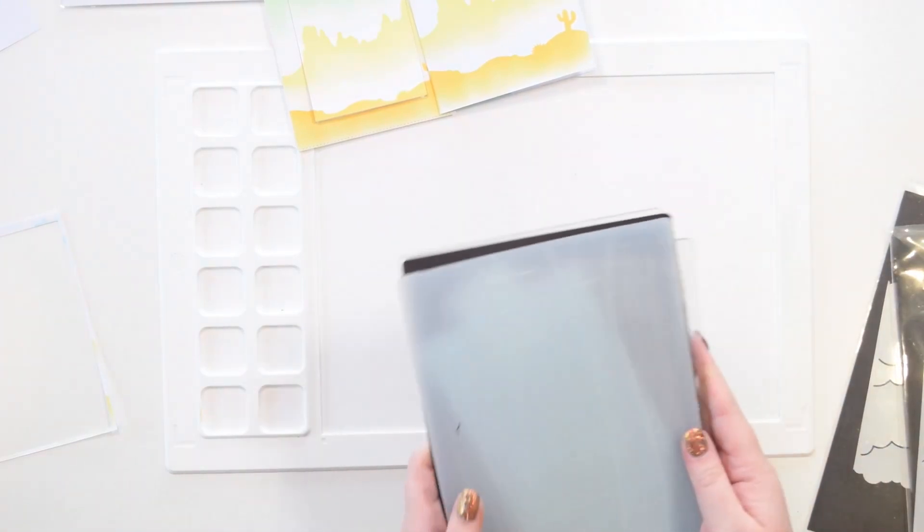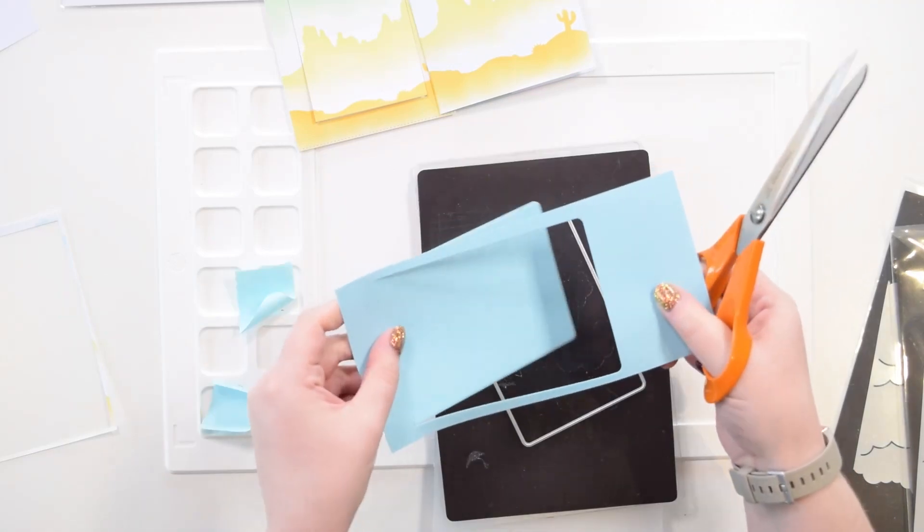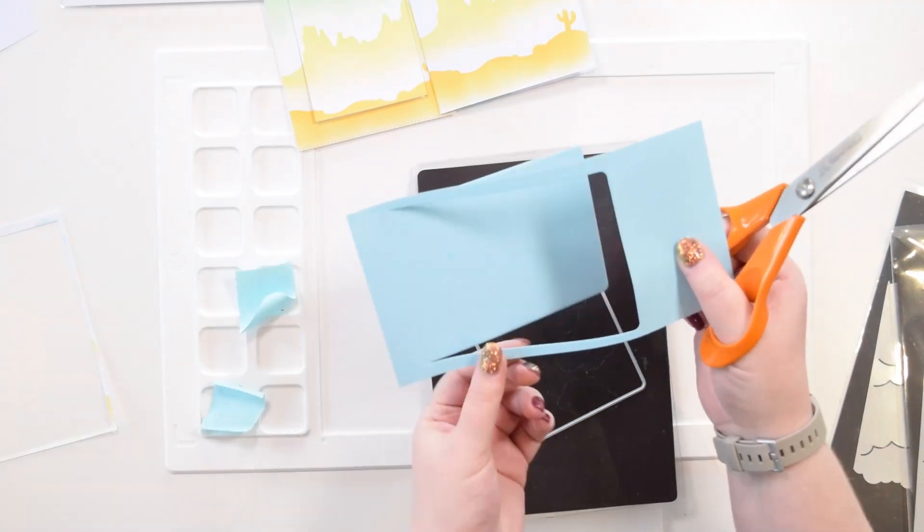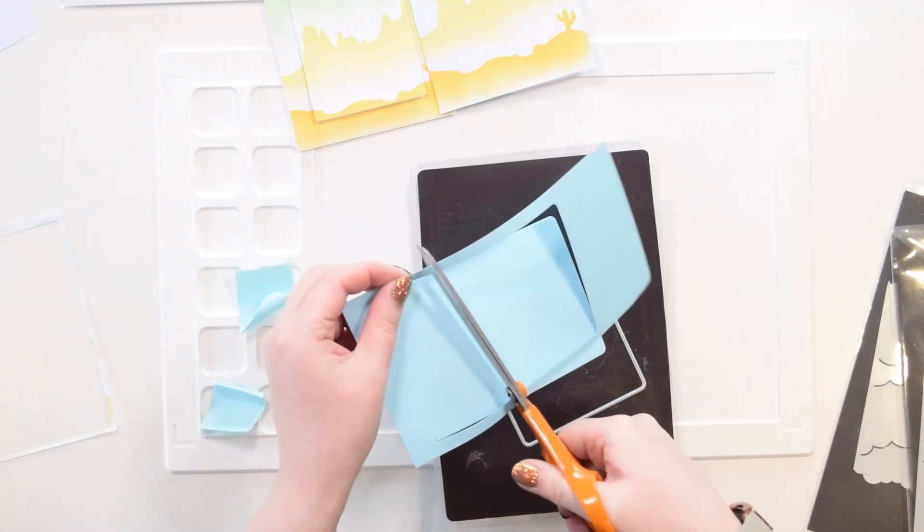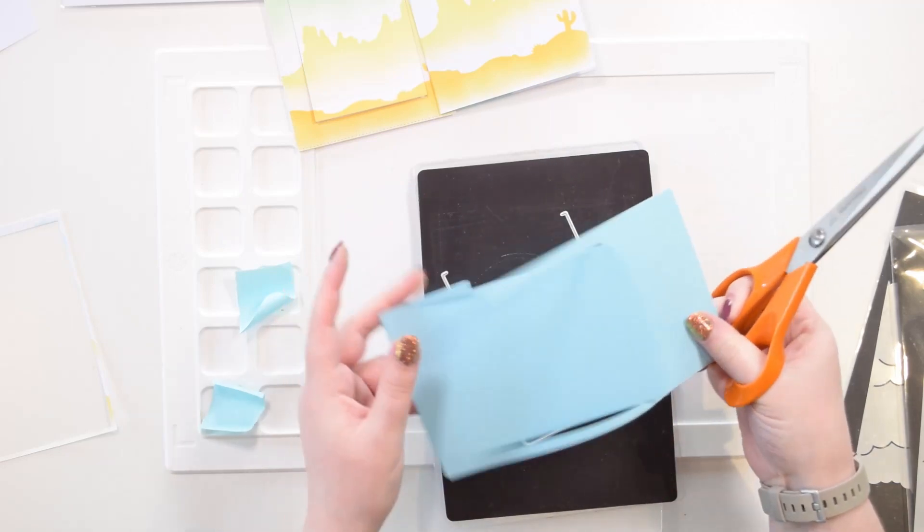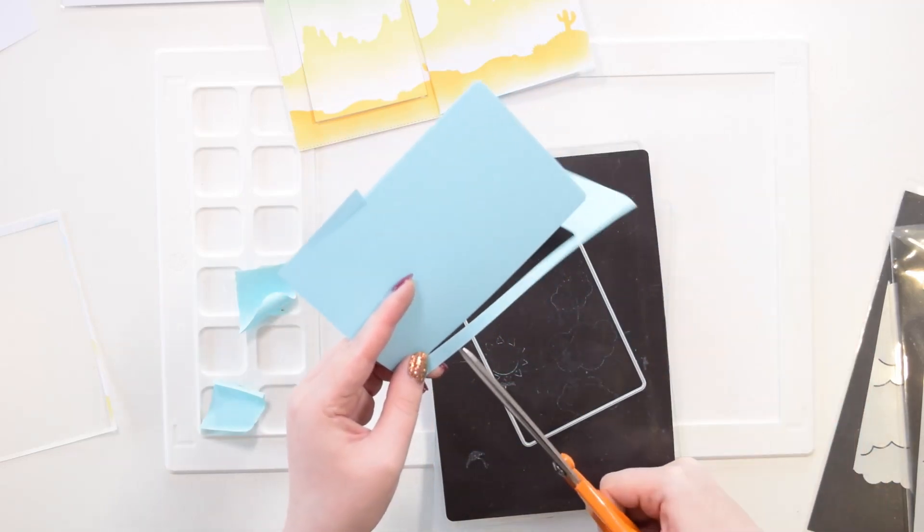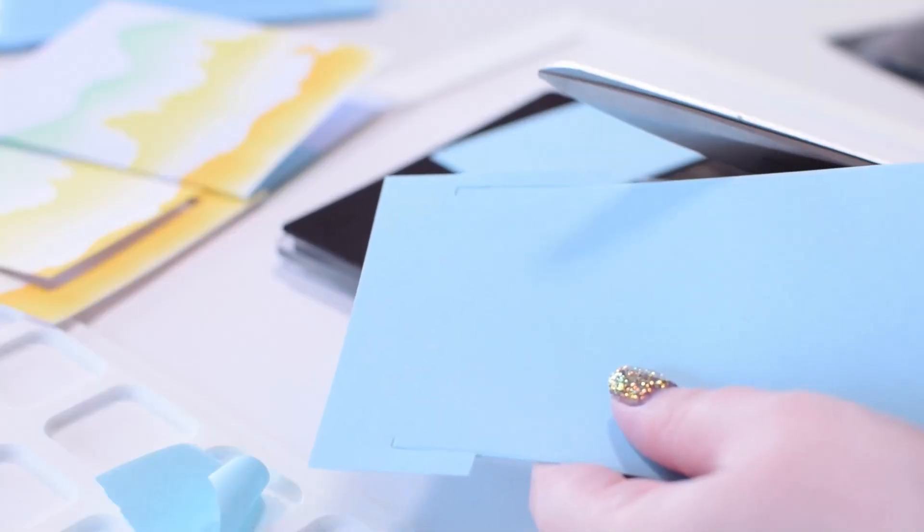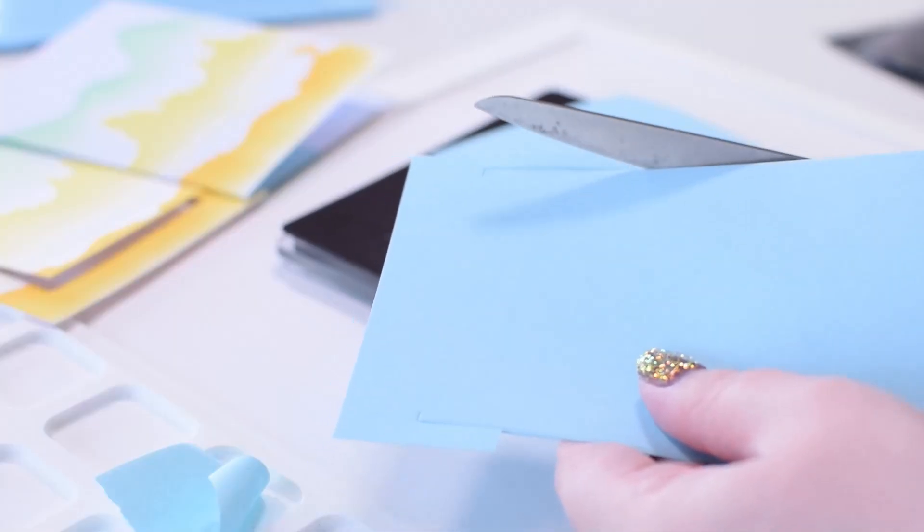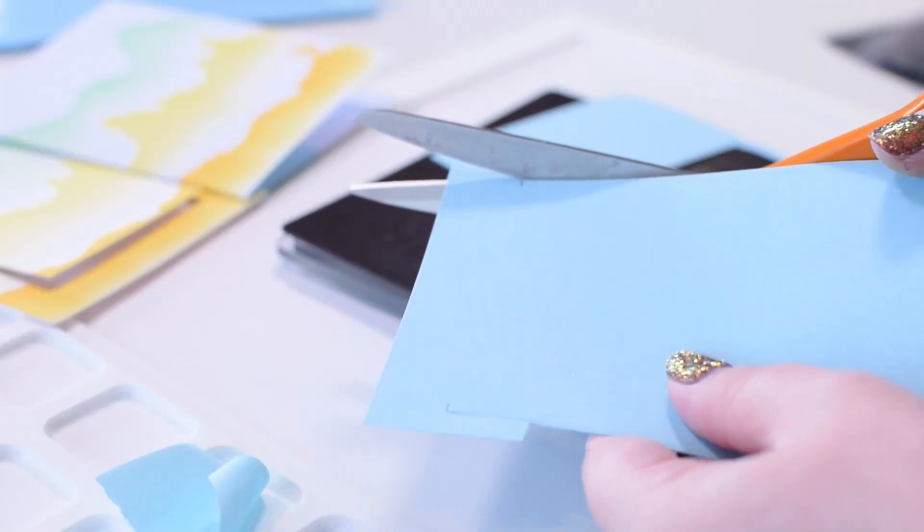Use some memo tape to keep everything nice and snug. You'll be left with this panel here, which you need to just snip with some scissors to free out your pull tab. You'll have to trim these shorter in just a second.